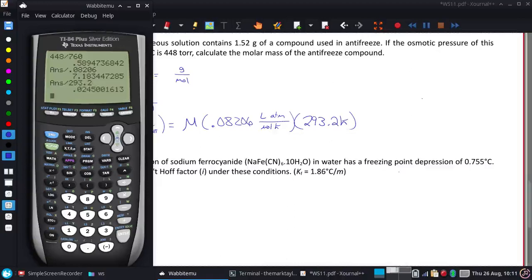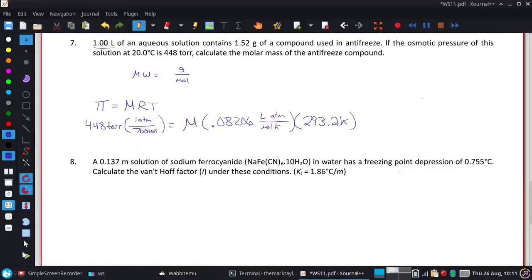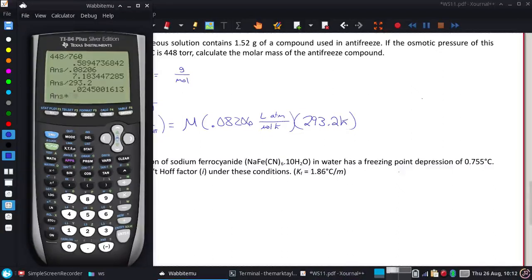And this is the molarity. But we want just the moles. So the next thing I'm going to do is take that molarity and multiply it by the volume I used. And in this case, that was just 1 liter, so we're just multiplying it by 1. And now it's just the moles of the antifreeze compound.